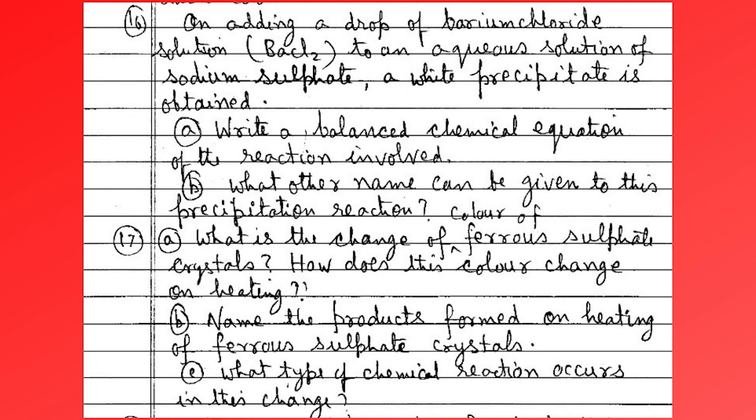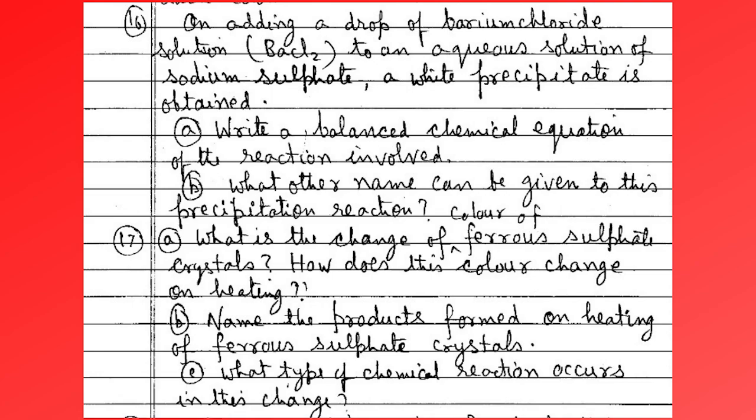What is the color of ferrous sulfate crystals? How does this color change on heating? Name the products formed on heating ferrous sulfate crystals, and what type of chemical reaction occurs? What do we mean by rusting? Describe an activity to find out the conditions under which iron rusts.